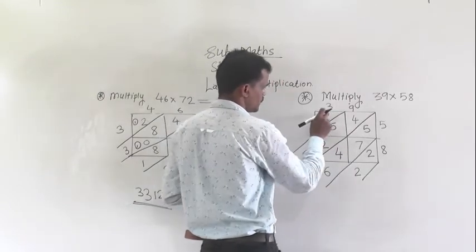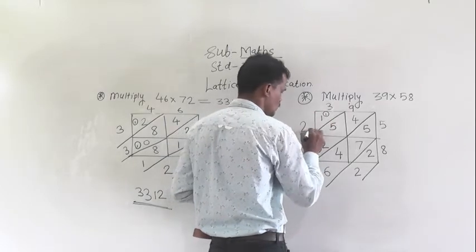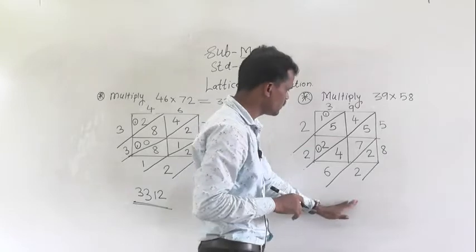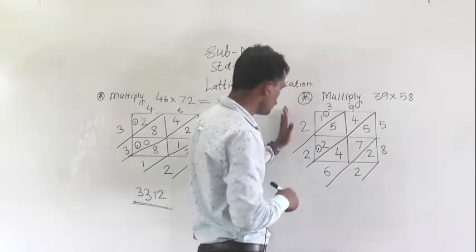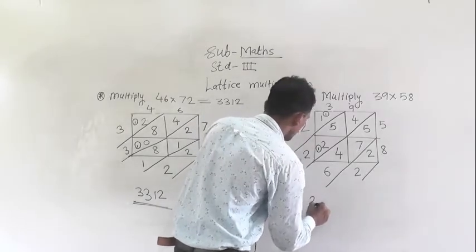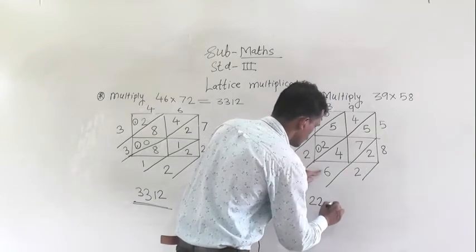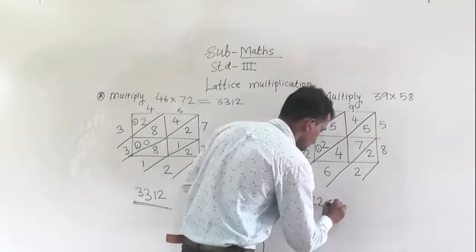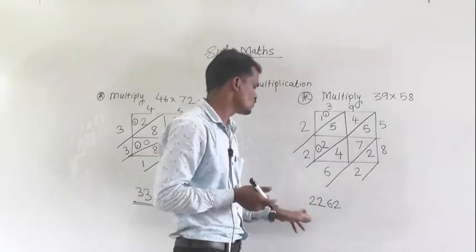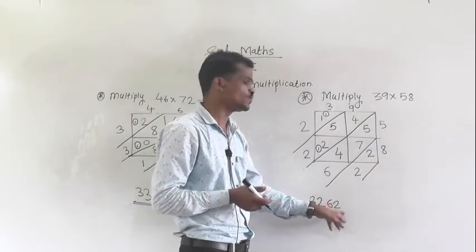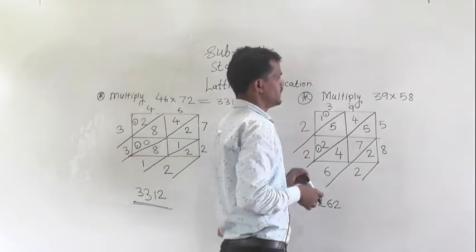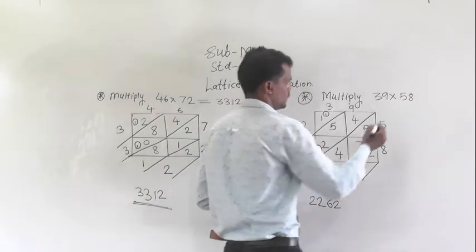Here 1 plus 1 carry is 2. Now next step is to write this number starting from the left side. So here 2, then 2, then 6, then 2. So 2262 is the product of 39 multiplied by 58.